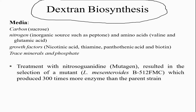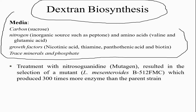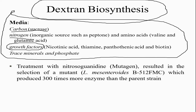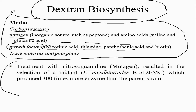Just as with xanthan, dextran biosynthesis requires a nutrient medium with a carbon source, nitrogen source, and growth factors. Important growth factors for dextran formation include nicotinic acid, thiamine, pantothenic acid, and biotin. Treatment with nitrosoguanidine, a mutagen, resulted in selection of a mutant strain that produced 300 times more enzyme than the parent strain.